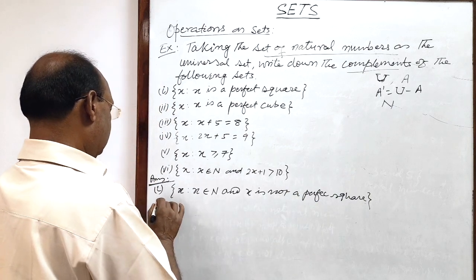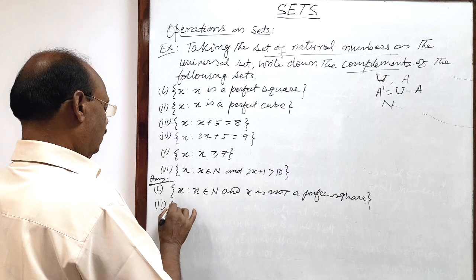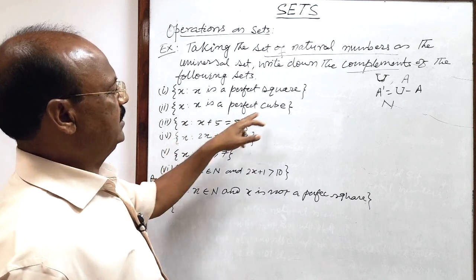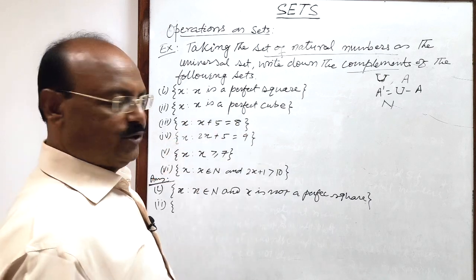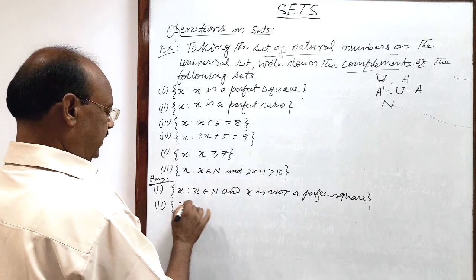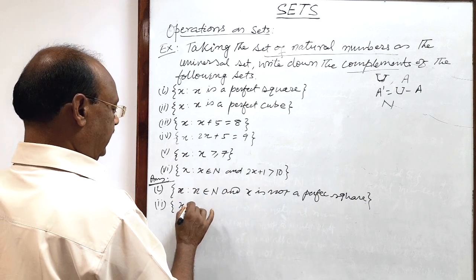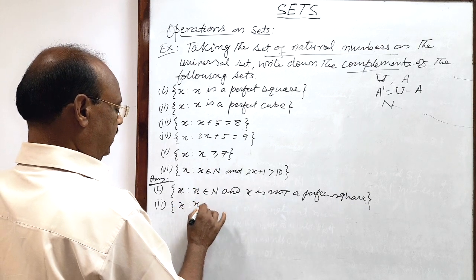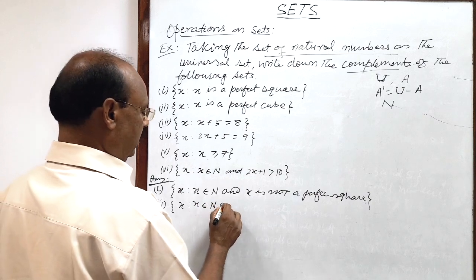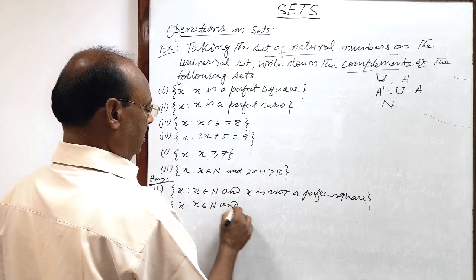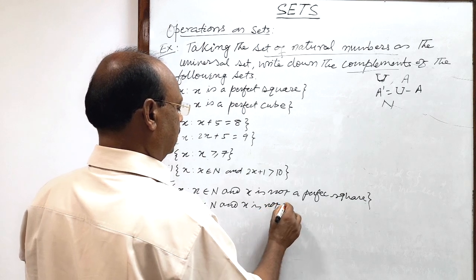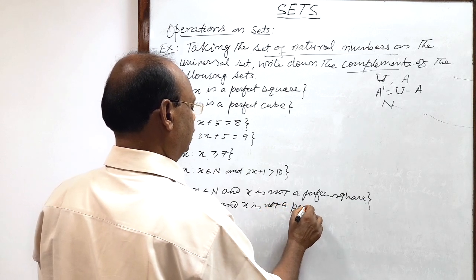Similarly, we can do the other questions. Question number two: x such that x is a perfect cube. The answer is: the set consisting of element x such that x belongs to the set of natural numbers and x is not a perfect cube.